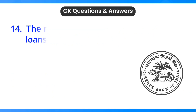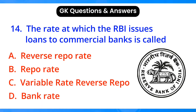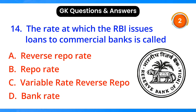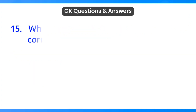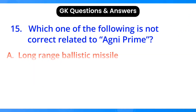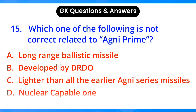The rate at which the RBI issues loans to commercial banks is called what? Answer: option B, repo rate.